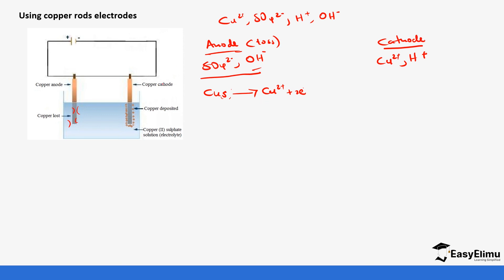These electrons travel to the cathode where copper ions are still preferred over hydrogen ions, since copper is more positive. The copper ions gain two electrons to form copper solid deposited at the cathode, while copper is being lost at the anode. So after some time the copper anode has to be replaced because it has been used up. With copper electrodes, the copper sulfate solution color does not change because we are continuously introducing copper ions at the anode and removing them at the cathode — a continuous cycle of addition and removal.